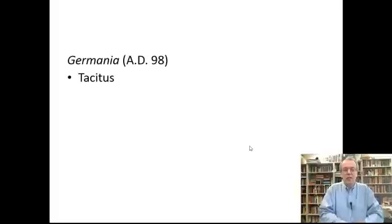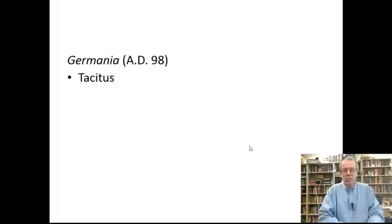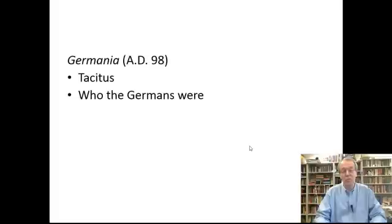The earliest description we have of those Germans comes from the classic Roman historian Tacitus. Tacitus is best known for two outstanding histories of early imperial Rome, one of them the Annals of Imperial Rome. But what we're interested in here is a short tract that he wrote on the Germans in his day called Germania. This was published in A.D. 98. It tells, among other things, who the Germans were, which were the people just beyond the Limes, just beyond the border of the Roman Empire.